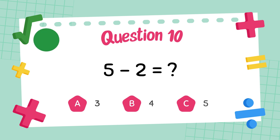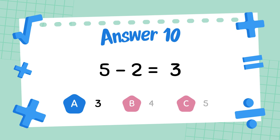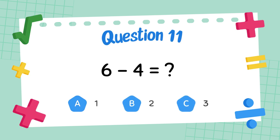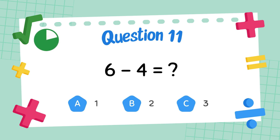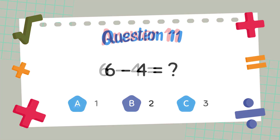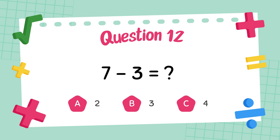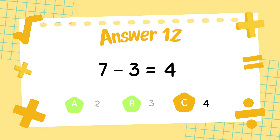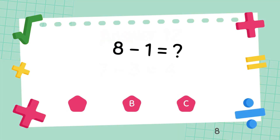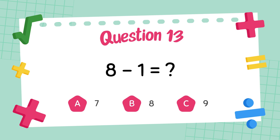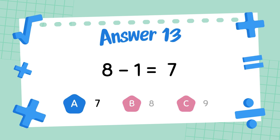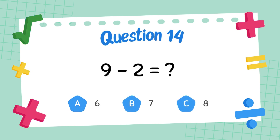What is 5 minus 2? The answer is 2. What is 6 minus 4? The answer is 4. What is 8 minus 1? The answer is 7. What is 9 minus 2? The answer is 7.